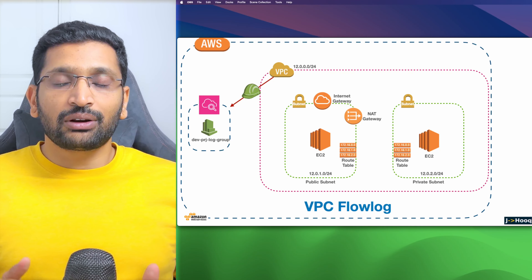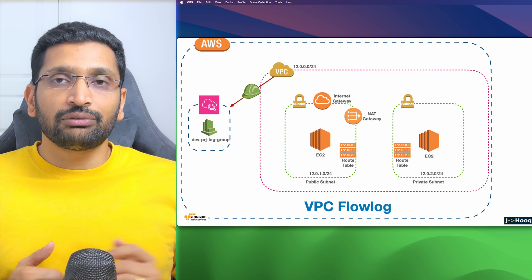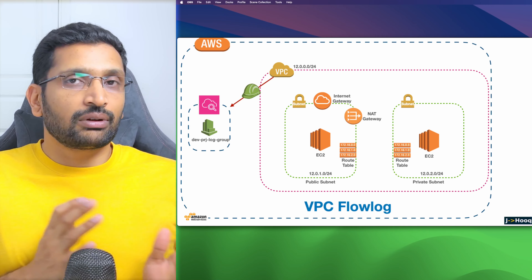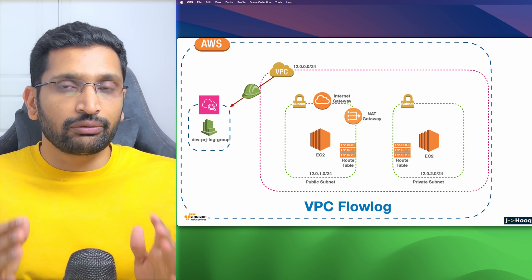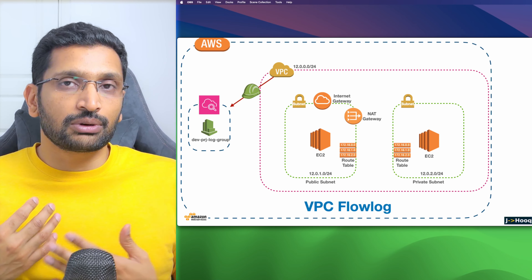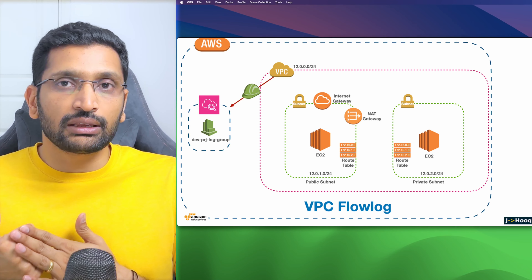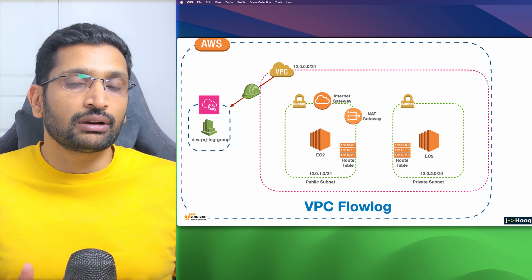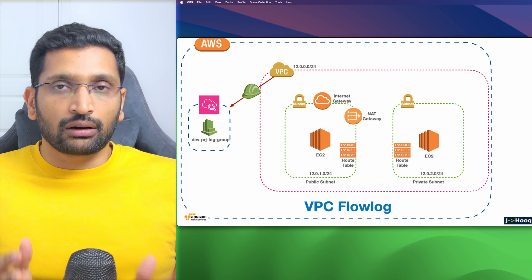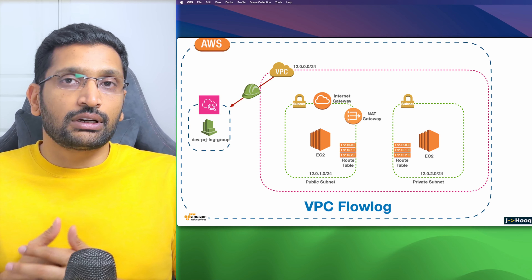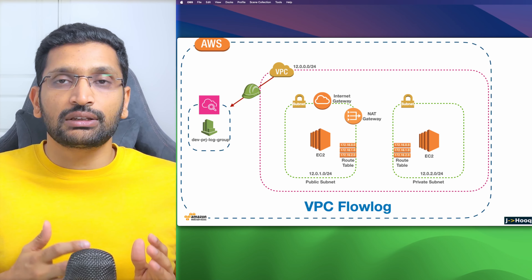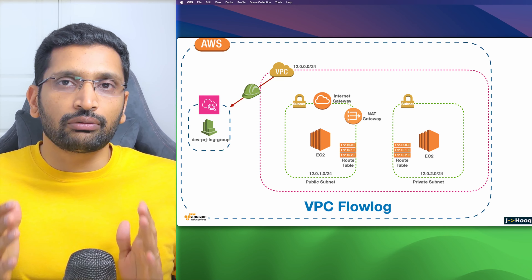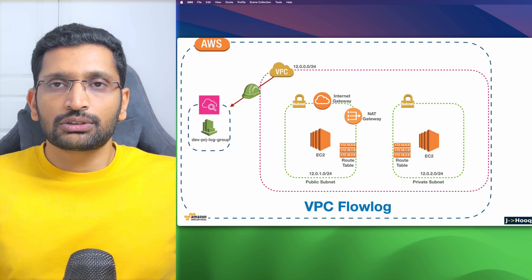Hello, this is Rahul and today we are going to talk about VPC flow logs. In this session we are going to start from scratch where we will set up our VPC, provision some resources like an EC2 instance, create a log group inside CloudWatch, and set up some IAM rules necessary to forward our VPC flow log from our VPC to our log group.